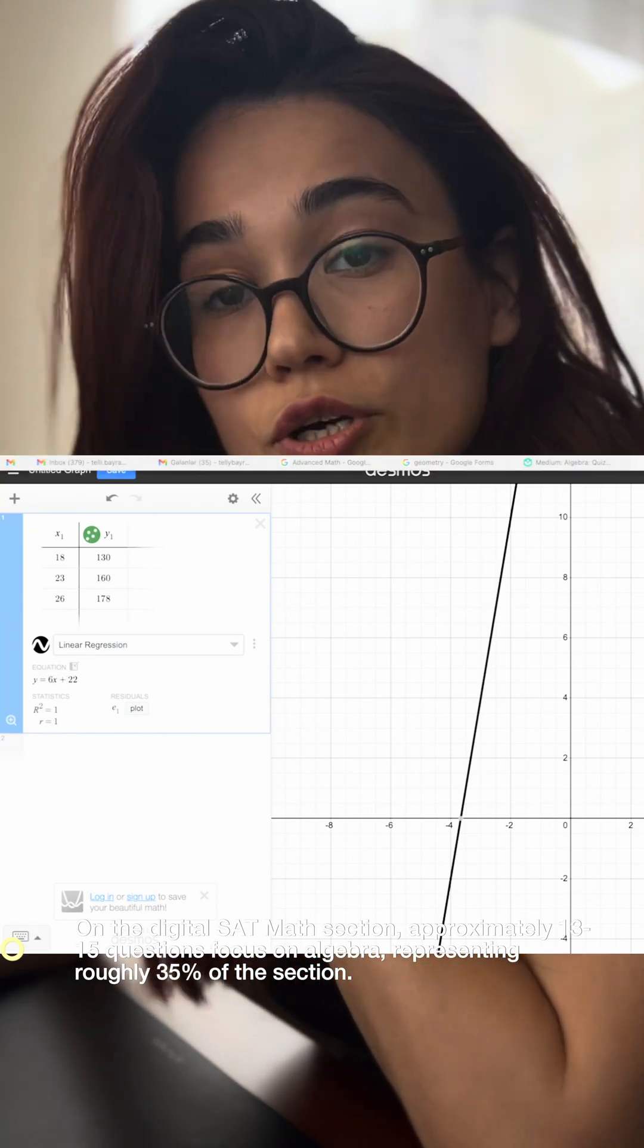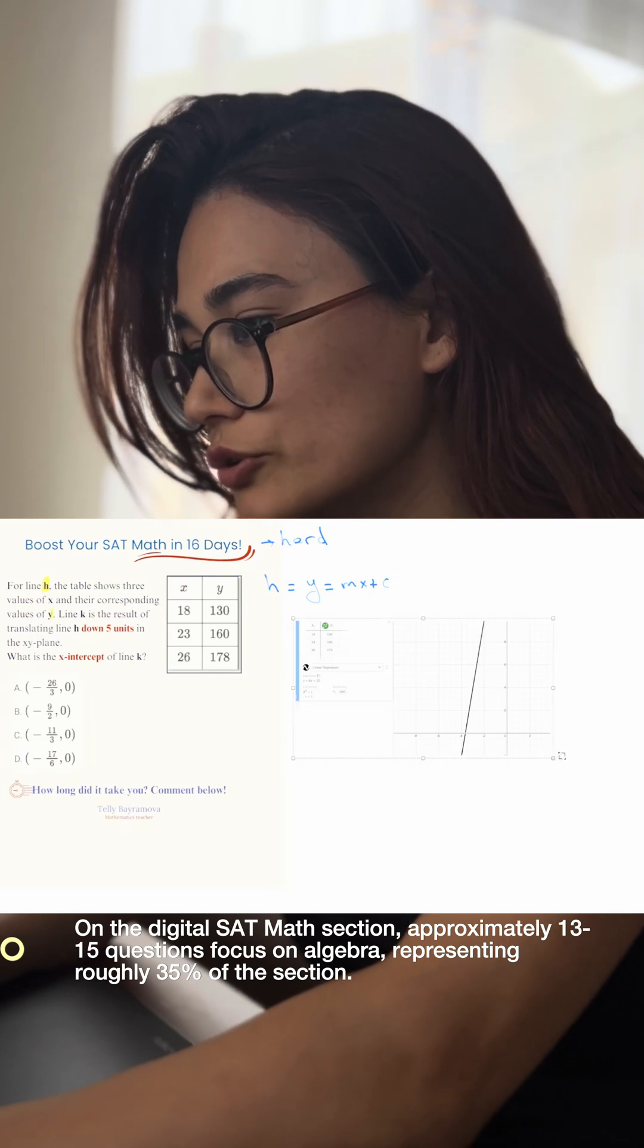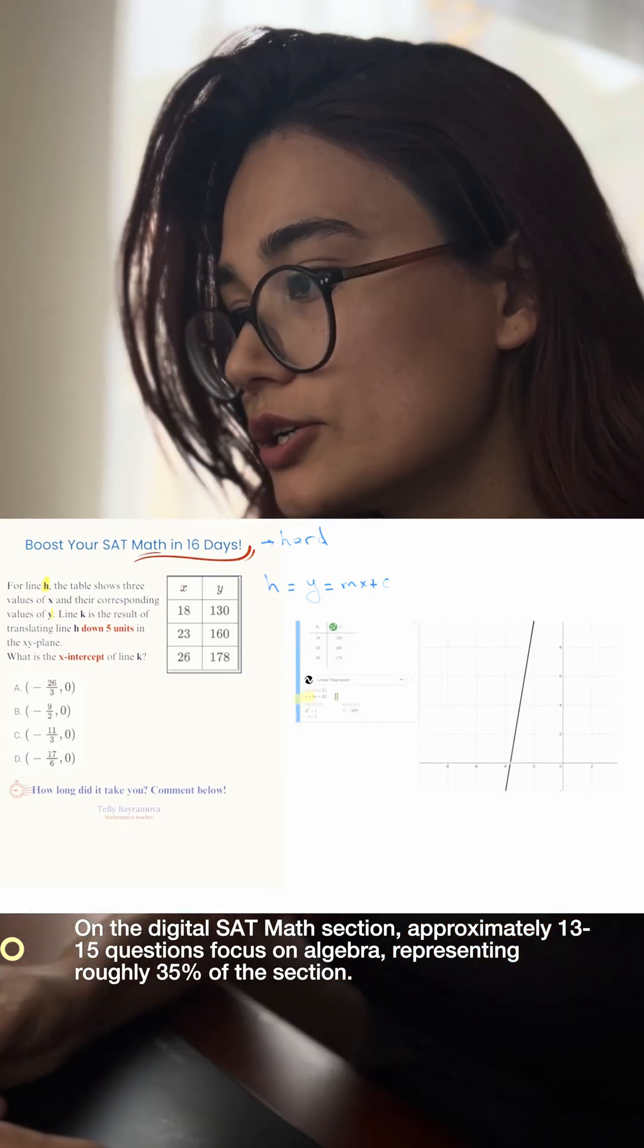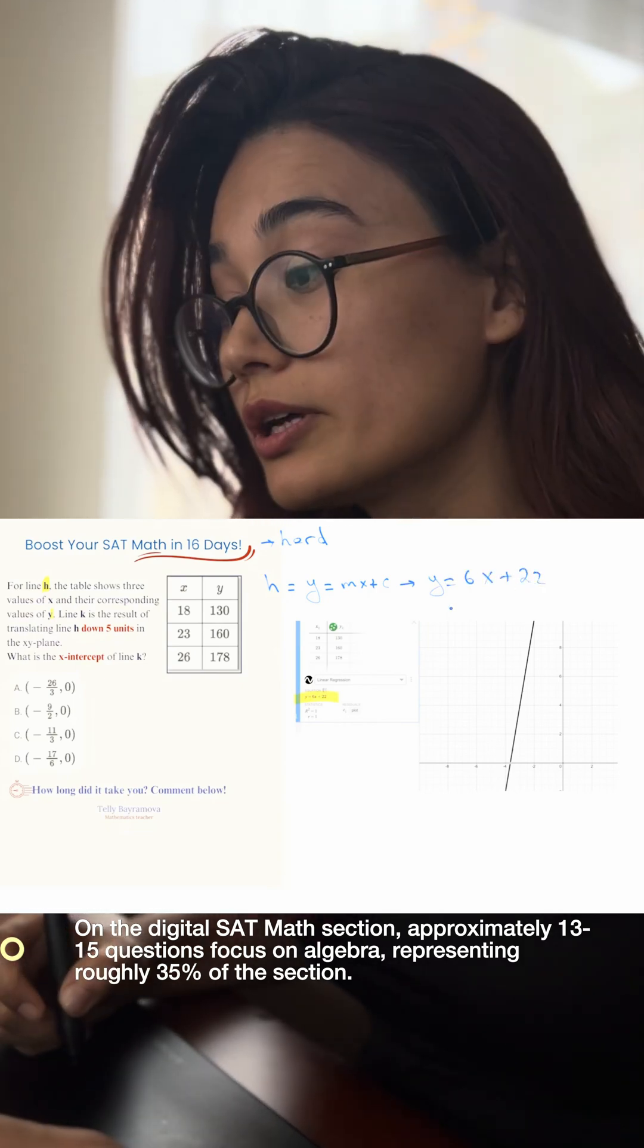Desmos gave us this formula, so h is y equals 6x plus 22. Without doing any manual calculations, you found that. Now let's look at what the question is asking: line k. We have a new line k which is h shifted down.